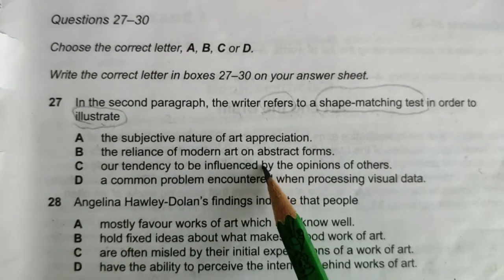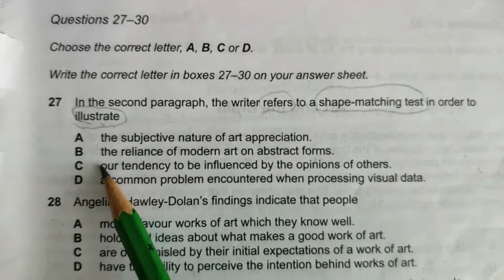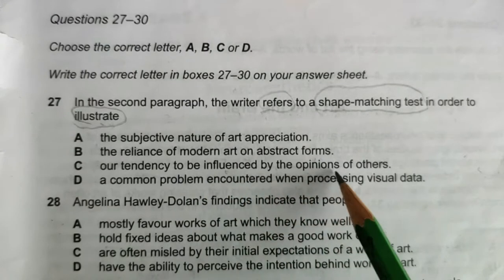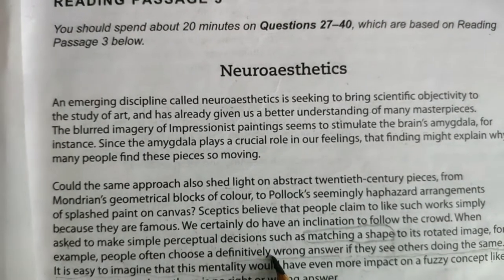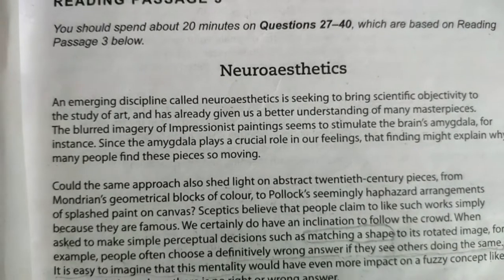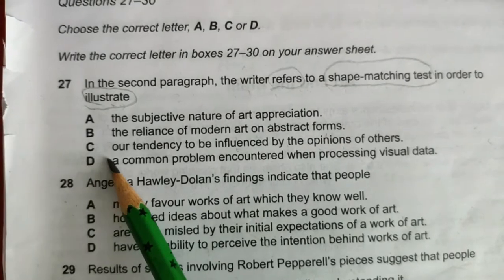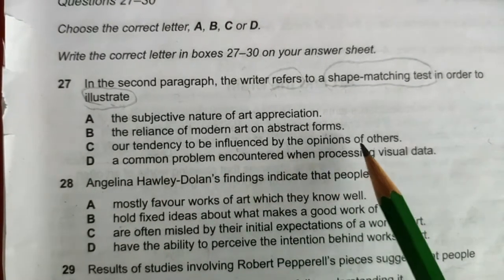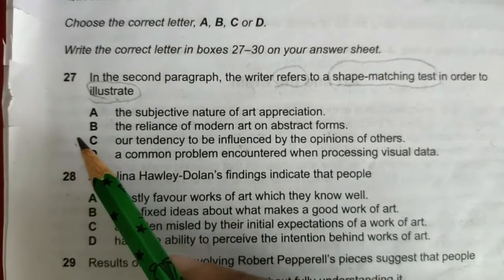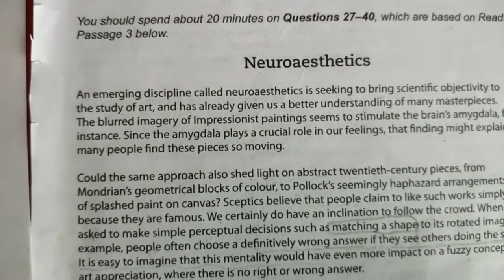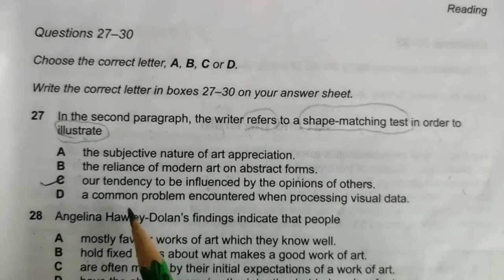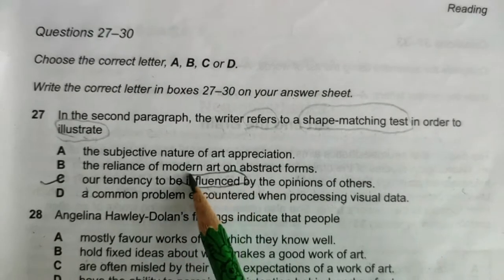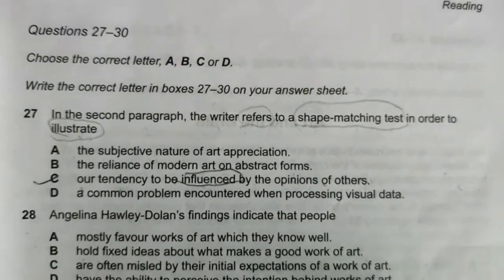Looking at the options: A — the subjective nature of art appreciation; B — the reliance of modern art on abstract forms; C — our tendency to be influenced by the opinions of others; D — not applicable. The answer is C, because the passage says people follow the crowd and choose wrong answers if they see others doing the same.